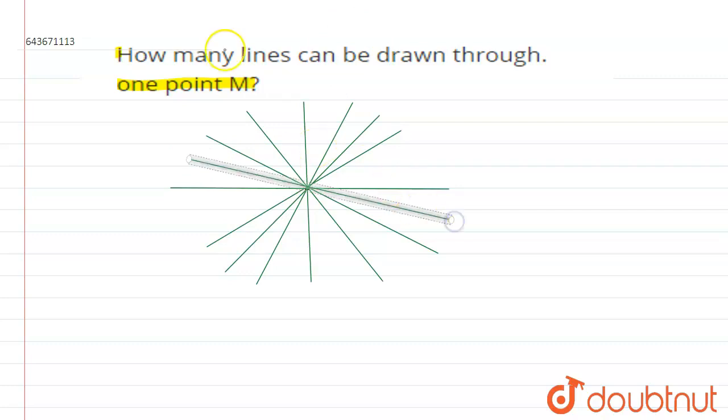So through a point M, we can draw as many lines as we want.